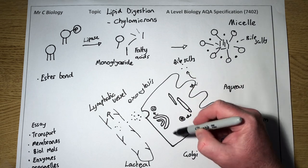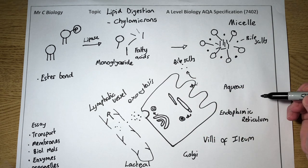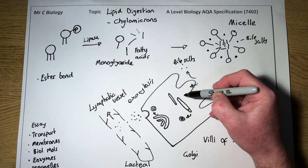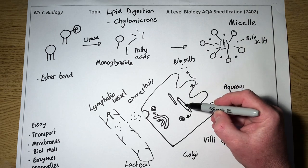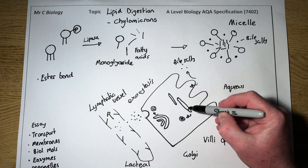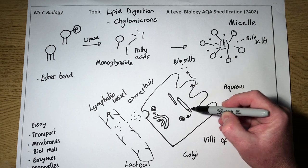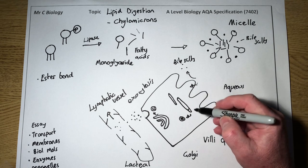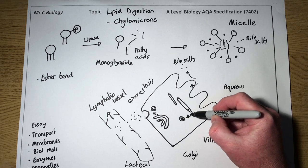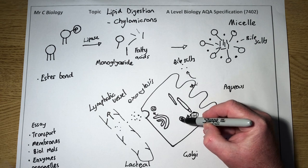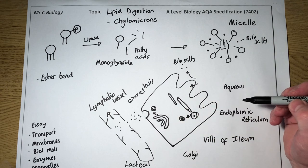So this is a single cell from a villus in the ileum, and those fatty acids and monoglycerides will reform in the endoplasmic reticulum. The endoplasmic reticulum has got a job of lipid metabolism and would reform a triglyceride and package it into a vesicle, and the vesicle would be transported to the Golgi.